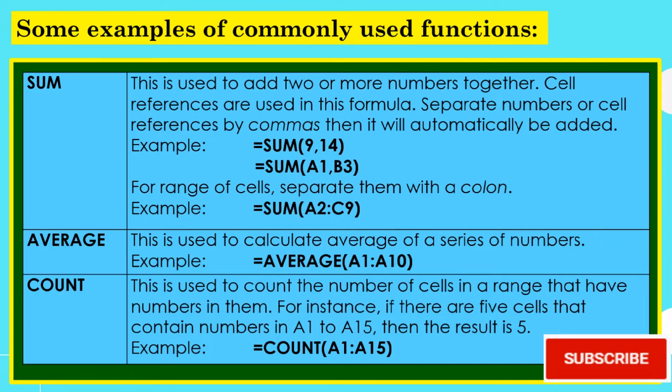For count, it is used to count the number of cells in a range that have numbers in them. For instance, if there are five cells that contain numbers in A1 to A15, then the result is 5. For example, equal sign, the word capital letters count, open parenthesis, A1, colon, A15, closed parenthesis.